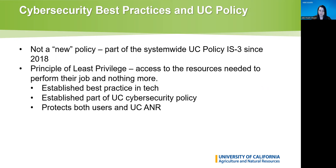We are working towards that compliance by enforcing and implementing the different policy rules in there. One of those policy rules — and it's a very important one — is called the principle of least privilege. What that basically means is that you give users access to the resources needed to perform their job and nothing more. This is an established best practice in tech all over the world and an established part of the UC cybersecurity policy, and it protects both UC ANR and users themselves by not giving them too much responsibility.